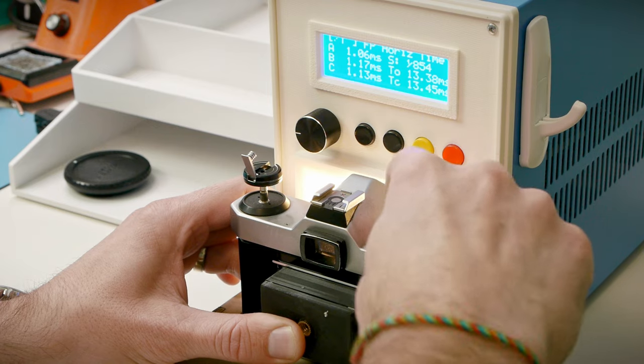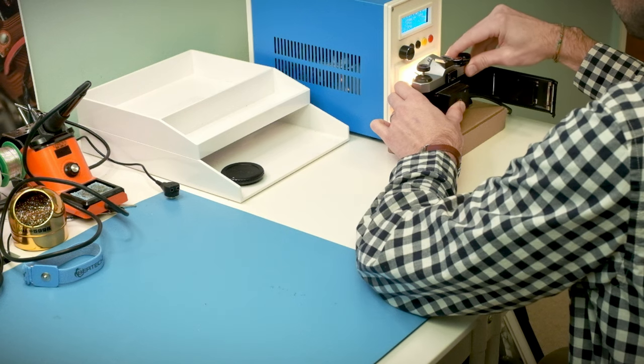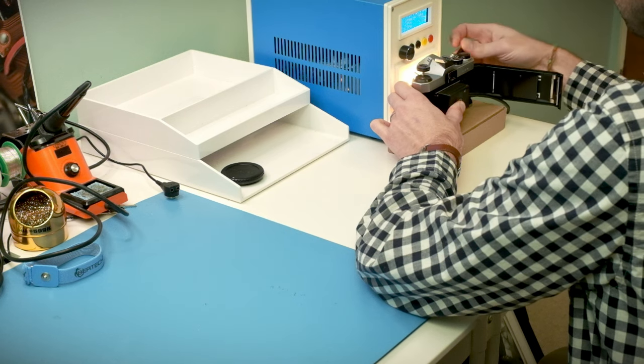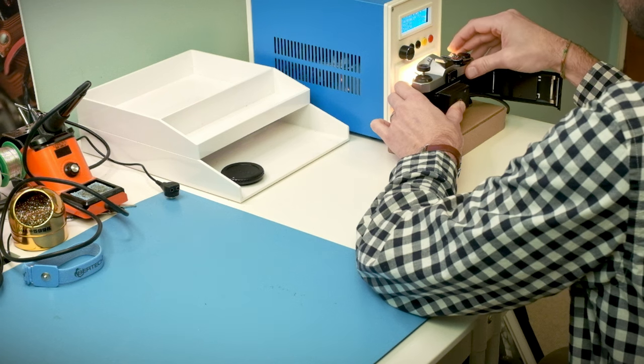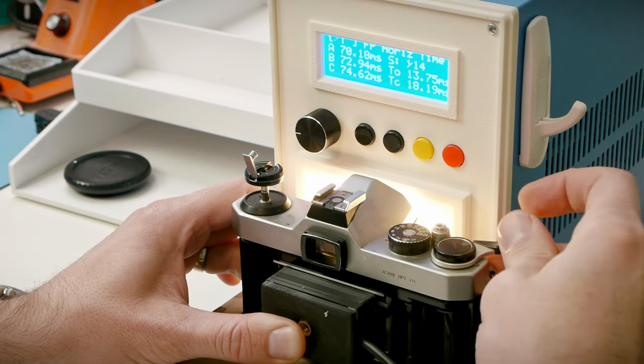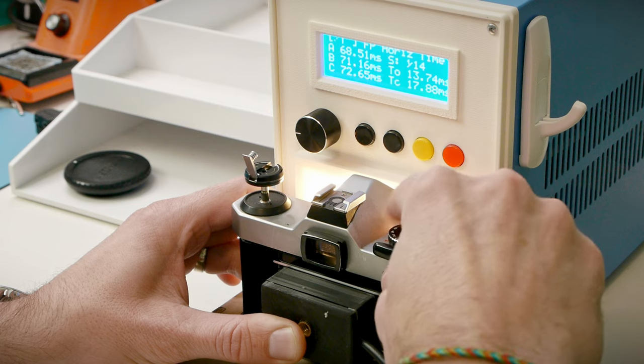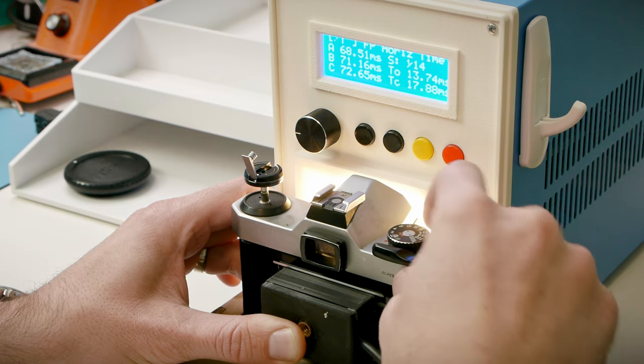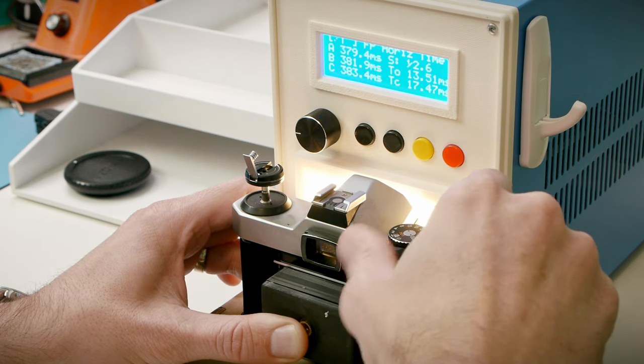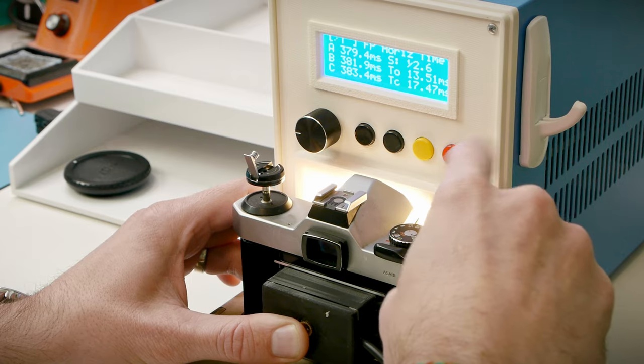The other thing I'm looking at when testing high speeds is the curtain travel time, because accurate curtain speeds are the foundation of a well-timed shutter. For a healthy K1000, my shutter tester should measure 12.5 milliseconds for the curtains to travel across the frame. And I'm seeing more like 13.4 milliseconds. That's pretty good.